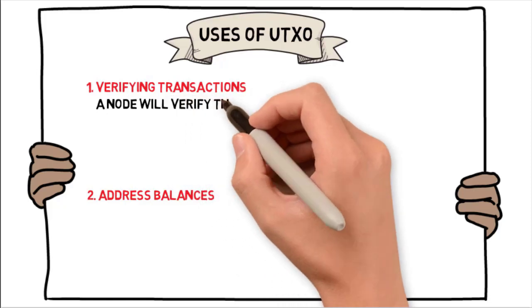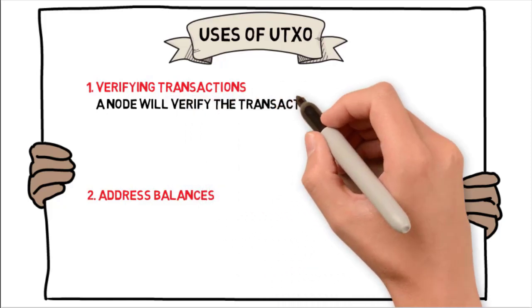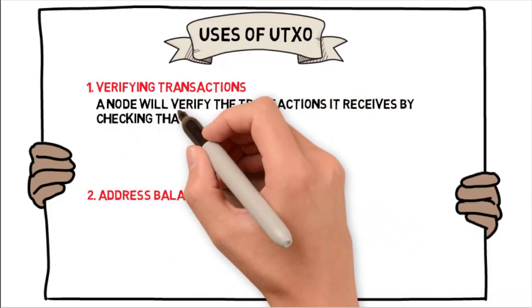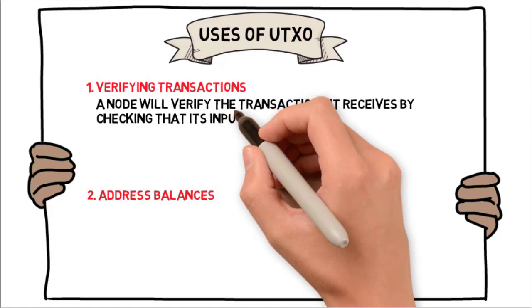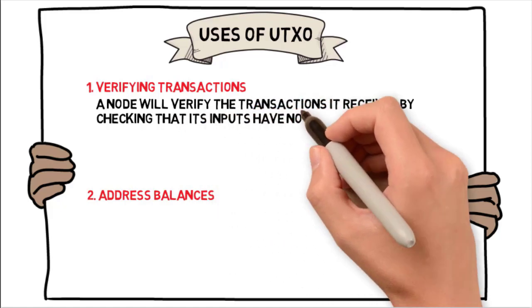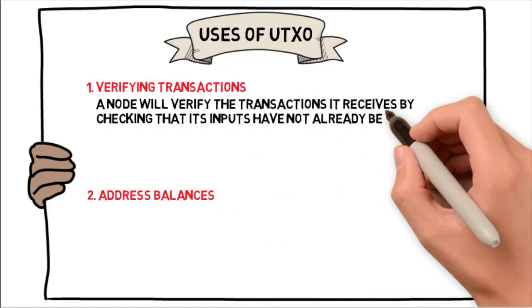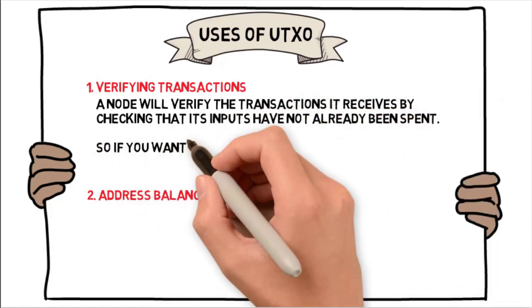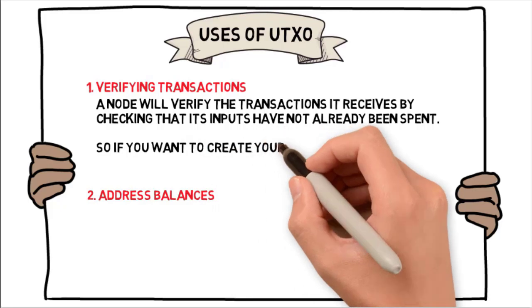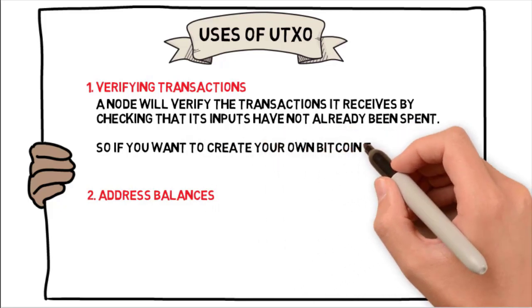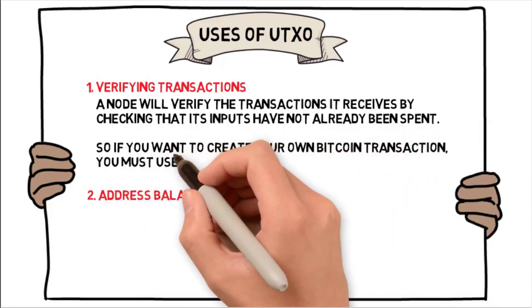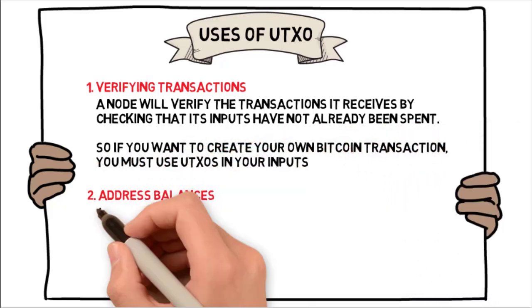Verified Transactions: A node will verify the transactions it receives by checking that its inputs have not already been spent. So if you want to create your own Bitcoin transactions, you must use UTXOs in your inputs.